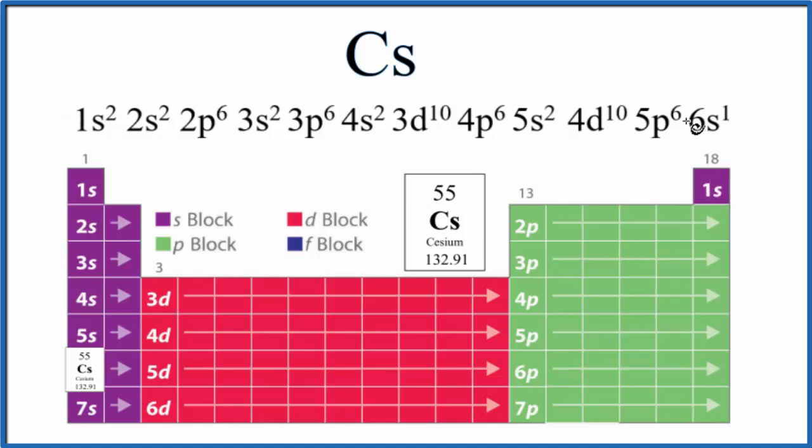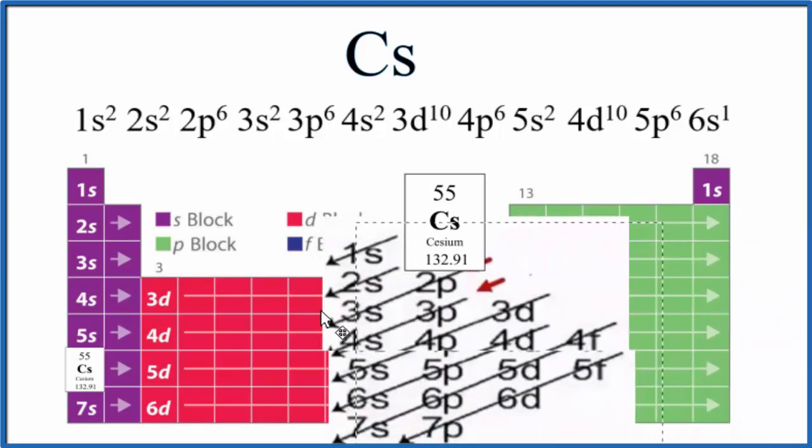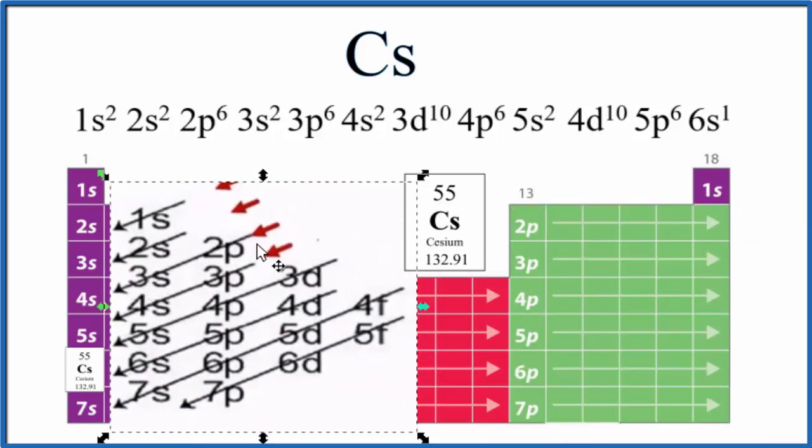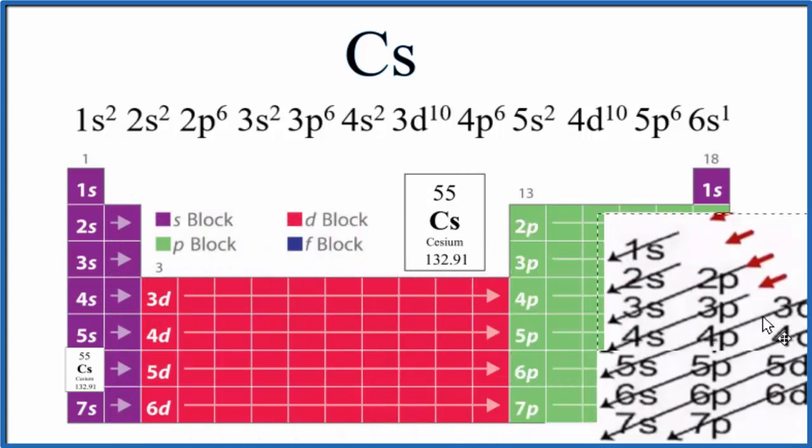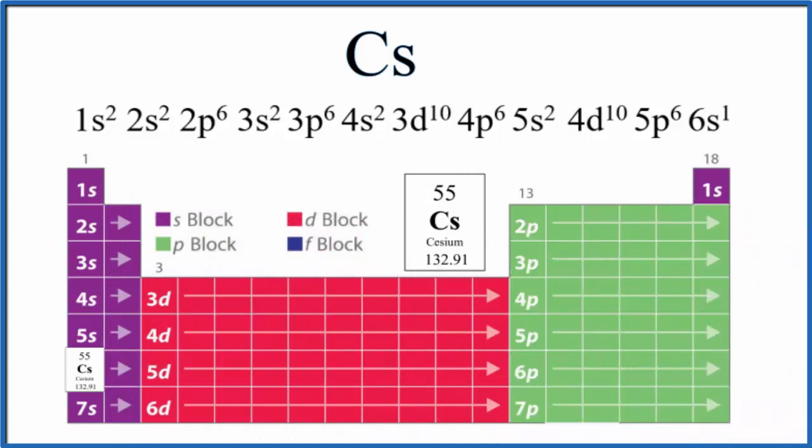So there are two ways to do this. One is you can use a chart like this here and then follow through and write the configuration. If you need help doing that, there's a link in the description. But probably a better way is for us to look at the periodic table organized by electron configurations. So let's do that.